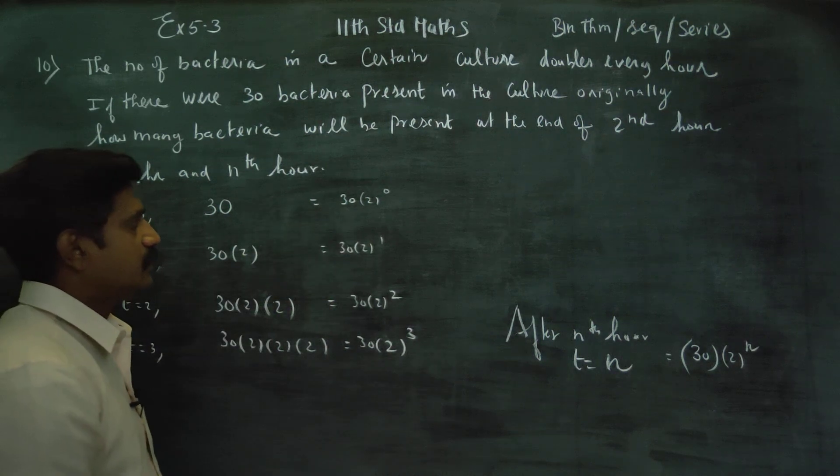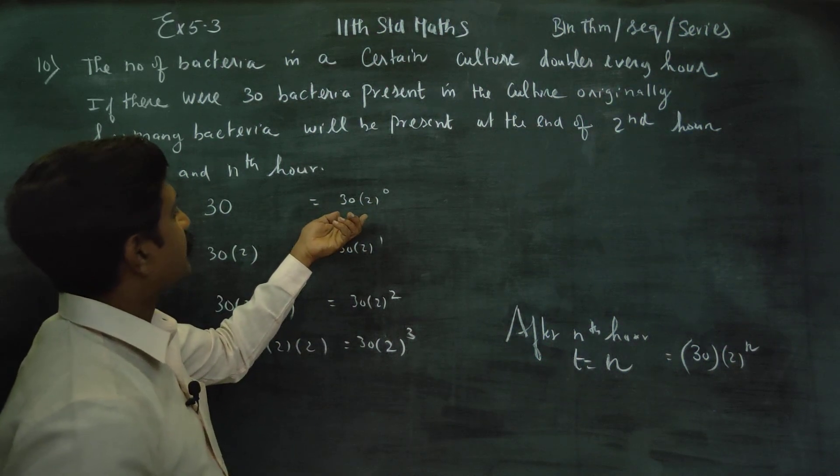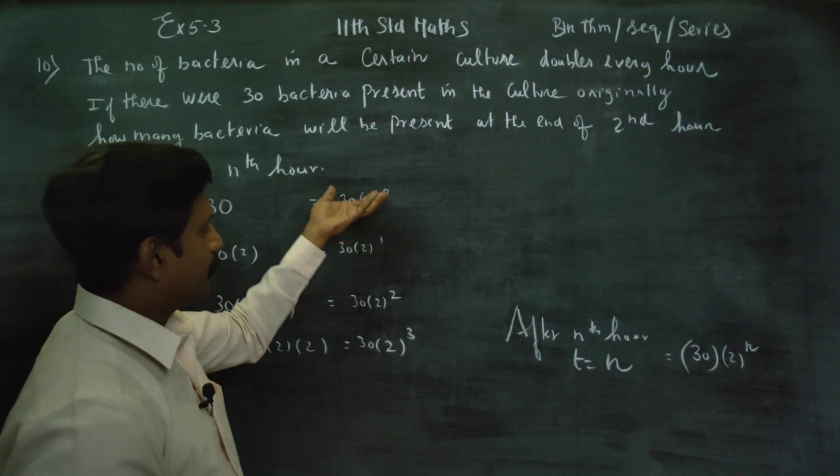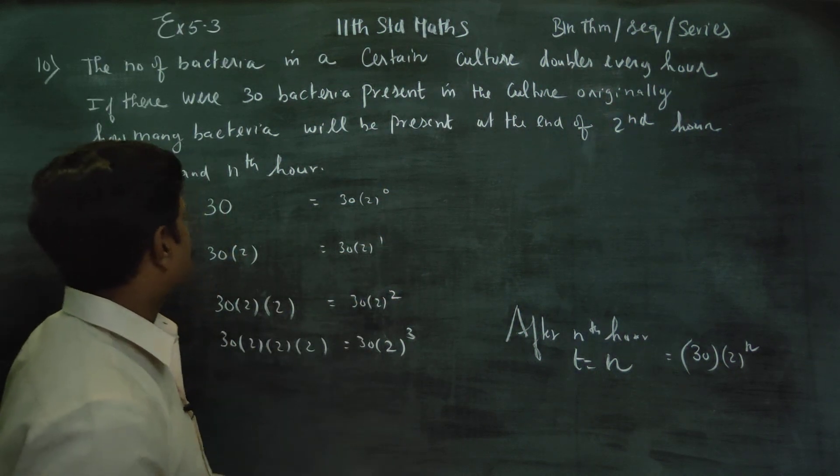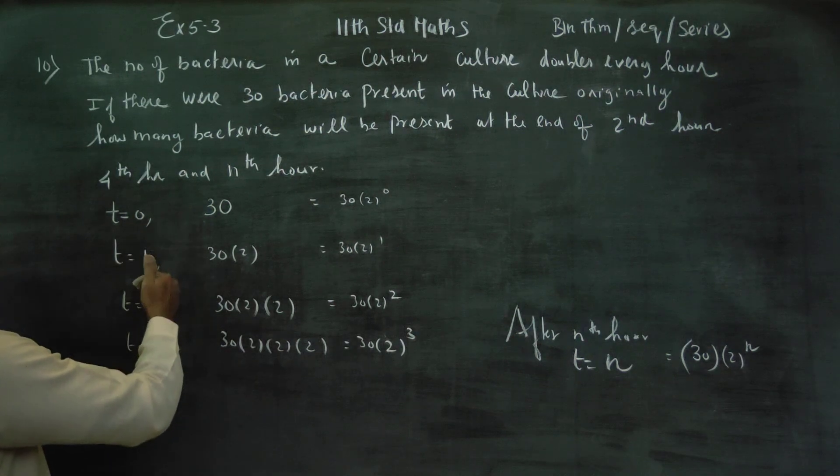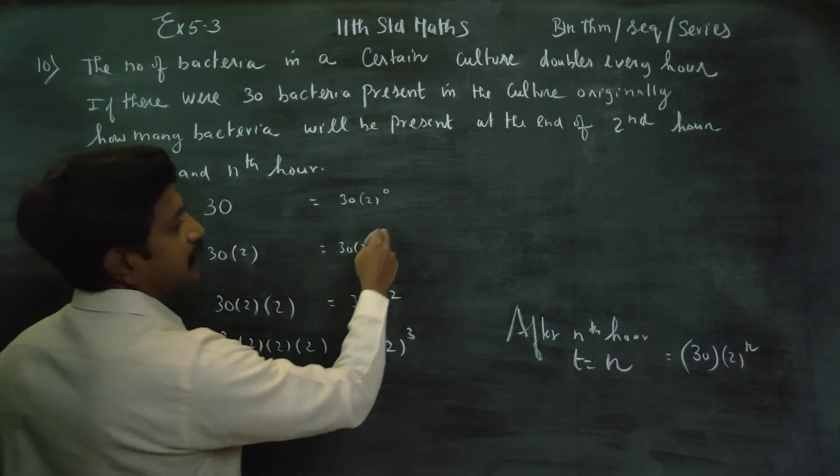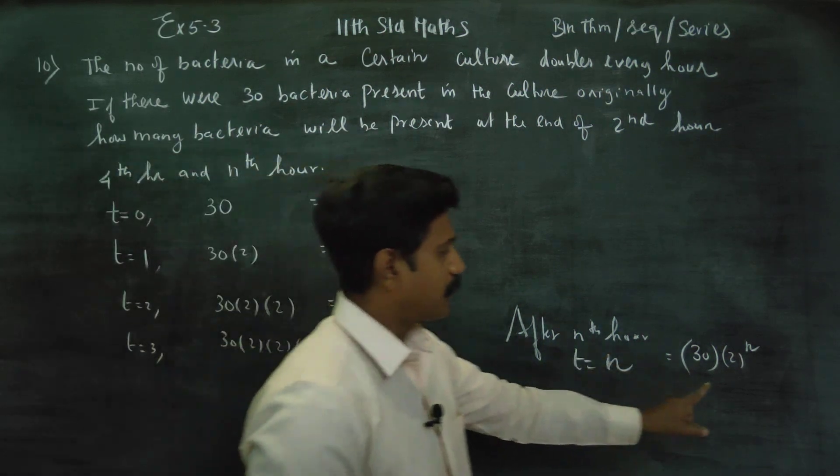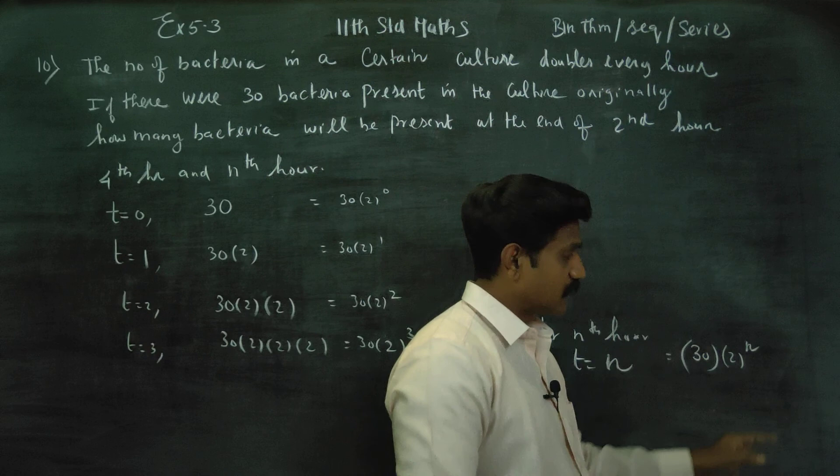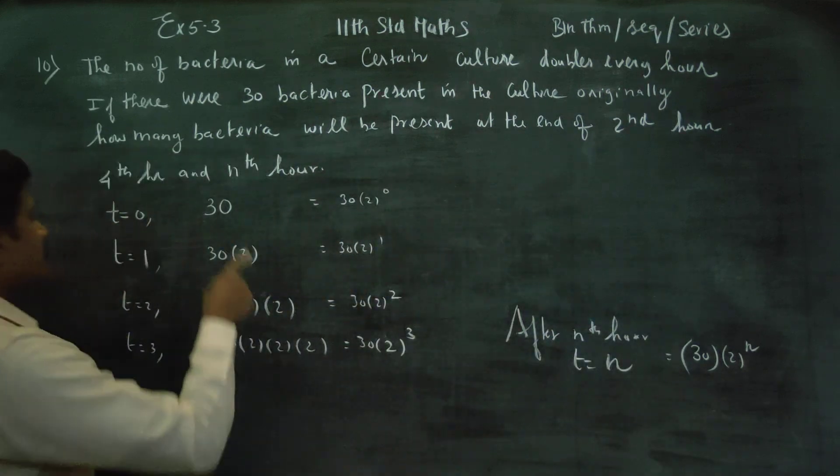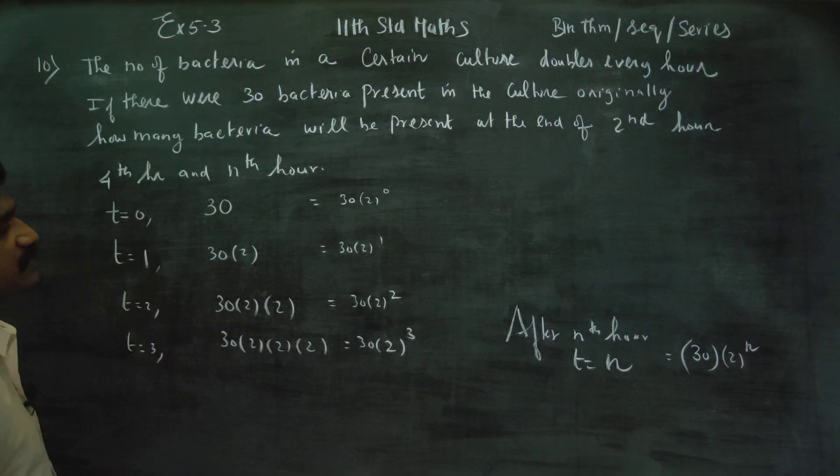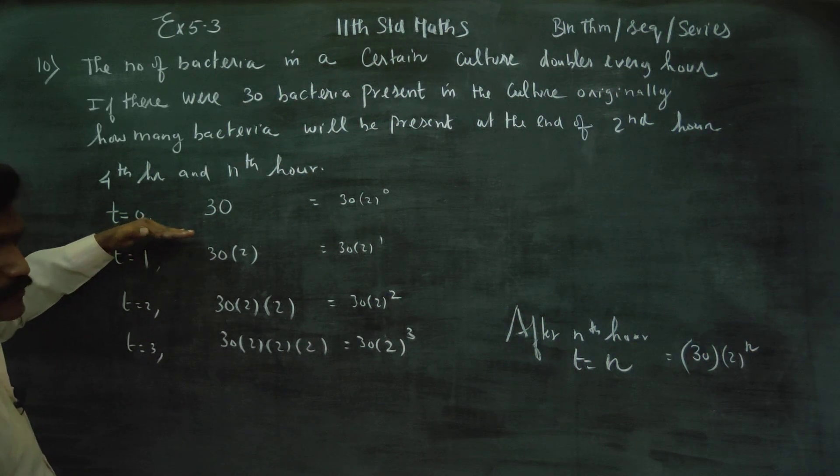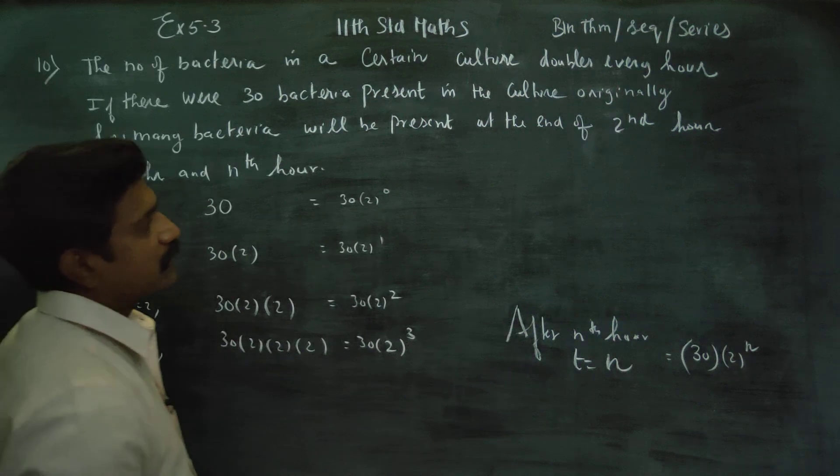If you want to write using GP terms, the starting value is 30, which is 2 power 0. This is the value. Then GP starting value - t0, t1. AR power n-1. This is 2 power 0, the original starting value. There are 30 bacteria, that's the same start. This is t1 and t0, this is the first term.